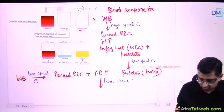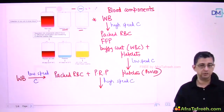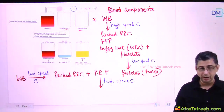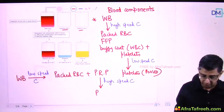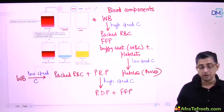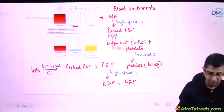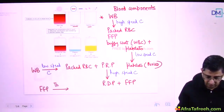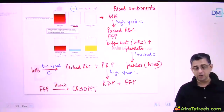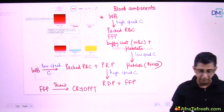You can remember either of the two methods - it is just two ways of generating blood components. The PRP component, platelet rich plasma, is used to generate one unit of random donor platelets, along with fresh frozen plasma. In both techniques, the fresh frozen plasma that is generated can then be thawed and used to generate cryoprecipitate.